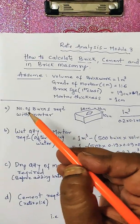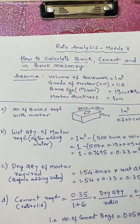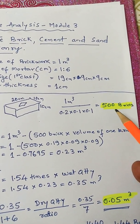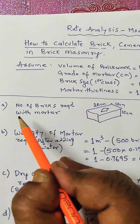So 1 meter cube by 0.2 meter into 0.1 meter into 0.1 meter, that is equal to 500 bricks. So 1 meter cube of the brickwork contains 500 bricks. This is with mortar.